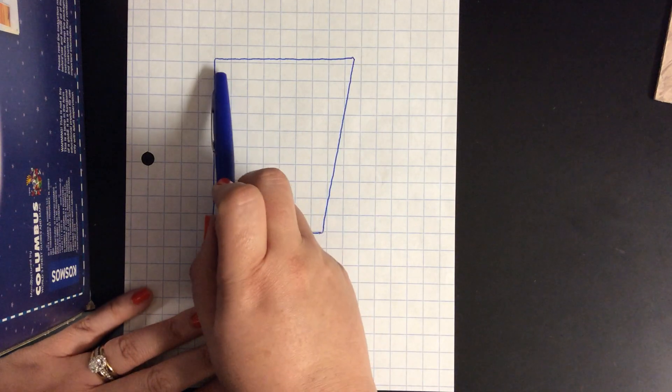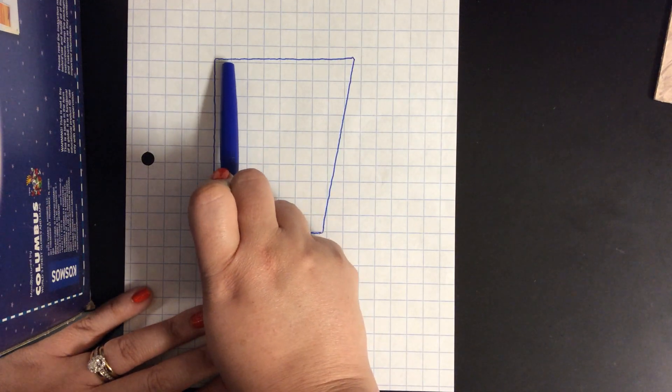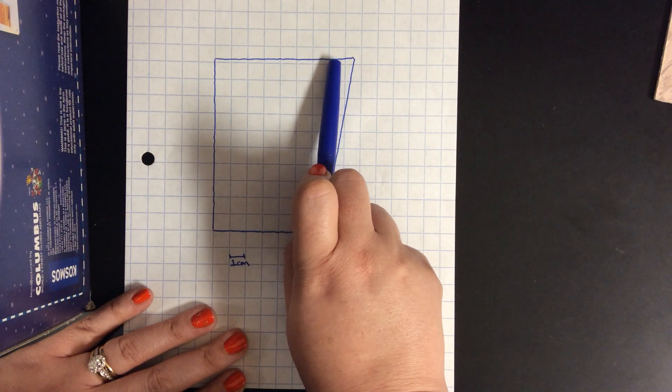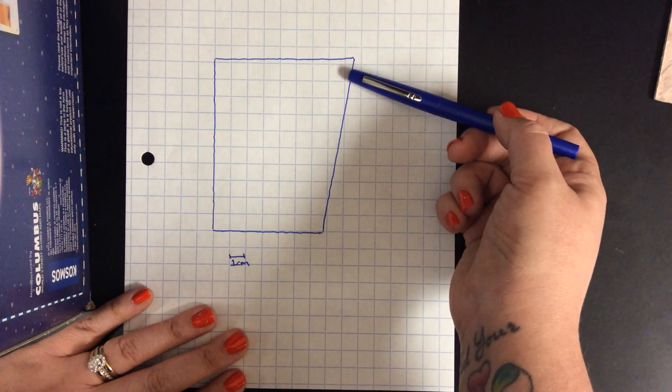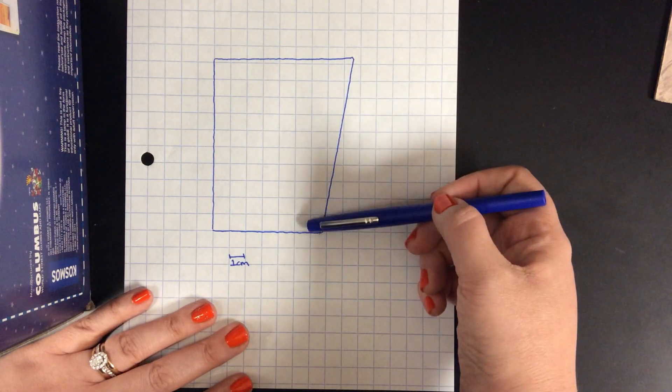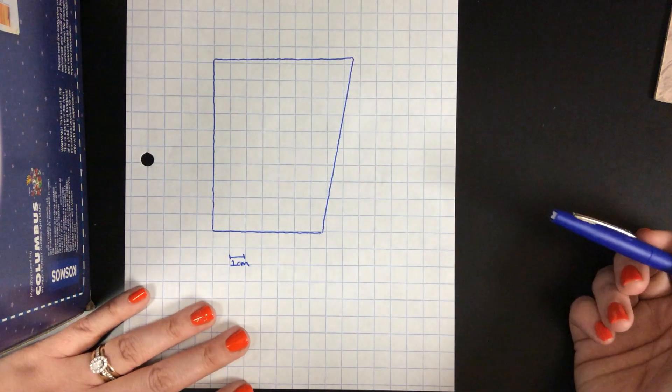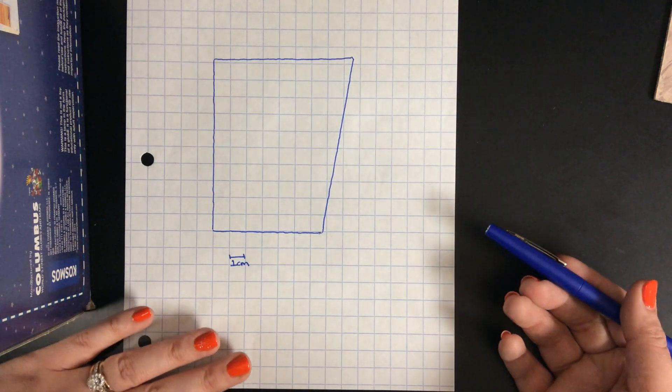Now the trick to that is all of these little baby ones right here, you have to sort of estimate what percentage of a full box that would be because you can't just leave them off. You can't say that the area is only the full boxes because then you're leaving off a whole bunch. So there is some estimation involved.